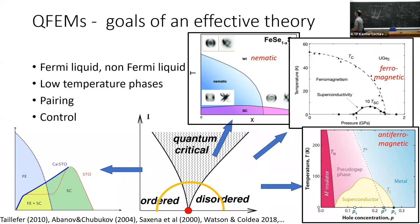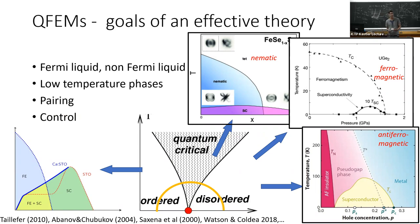Typical questions I might ask: is this a Fermi liquid or a non-Fermi liquid? What are the low-temperature phases? How does pairing occur in the system, if at all, and can I control it by external parameters? This would be extremely important in the context of quantum materials, and it's also how we get paid because our grant is on quantum devices and materials.